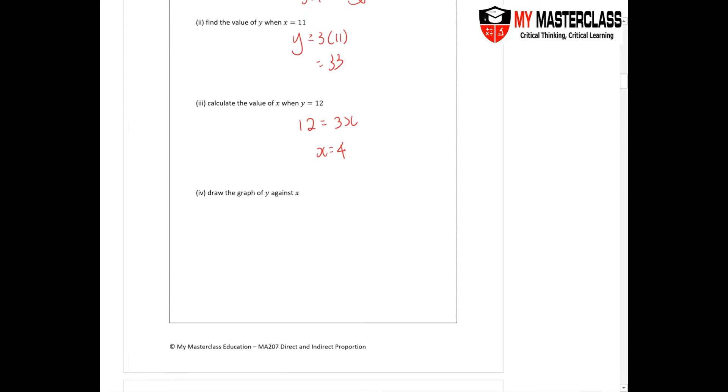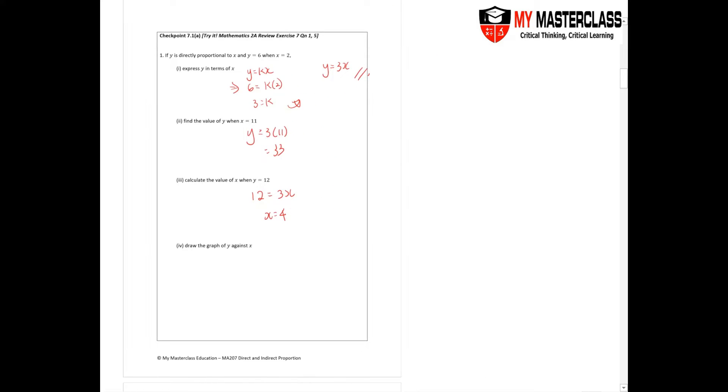Then they are asking to draw the graph of Y against X. Whatever they are doing here is actually a leading question. So Y and X—it's directly proportional, so you know that it's going upwards. Let's say, for example, I have 2, 6 here. Find the value of Y when X is 11. So when X is 11, it's way higher.